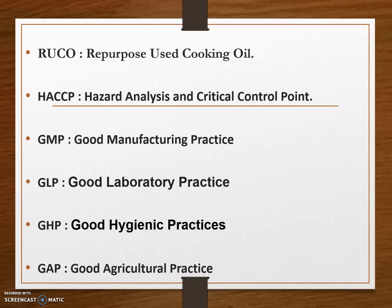Next is RUCO, which means Repurpose Used Cooking Oil. FSSAI launched RUCO as an ecosystem to enable the collection and conversion of used cooking oil to biodiesel. RUCO aims at the conversion of used cooking oil to biodiesel.